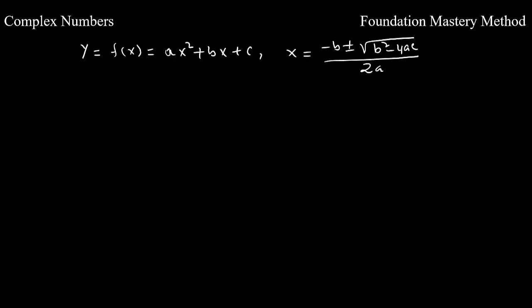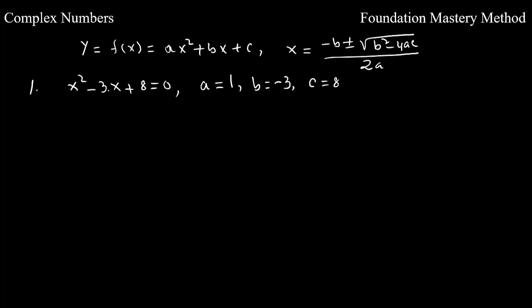In this video we'll be talking about complex zeros and the quadratic formula. If we have a quadratic function y = f(x) = ax² + bx + c, then the root or solution when you set it equal to 0 will be x = (−b ± √(b²−4ac)) / 2a, which is known as the quadratic formula. We are taking one example.